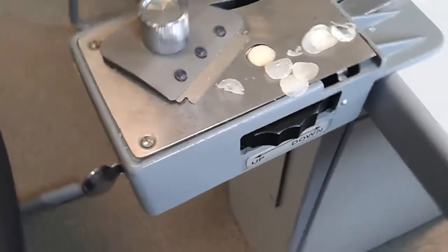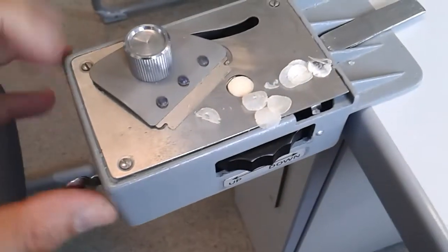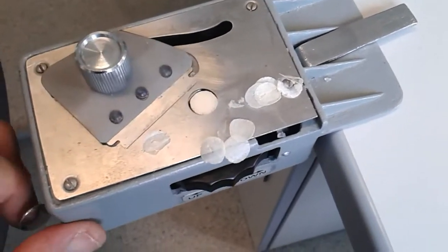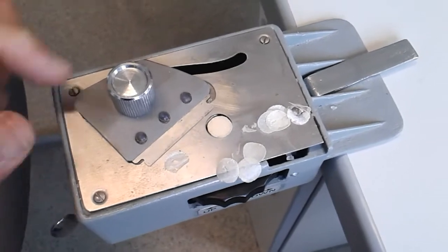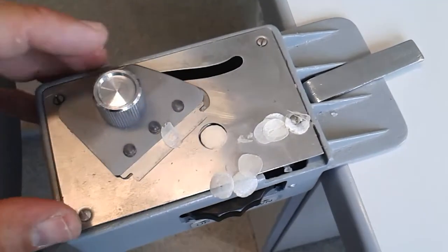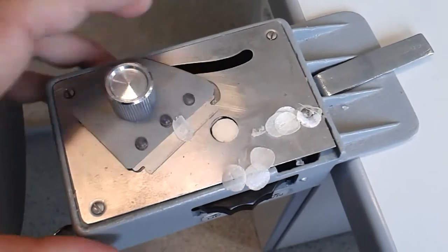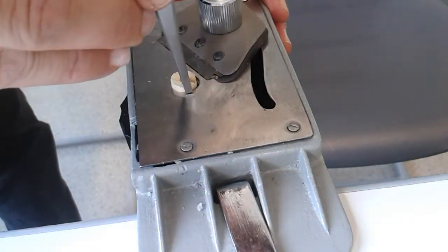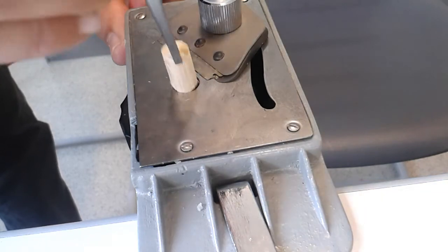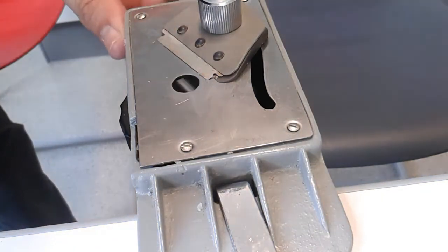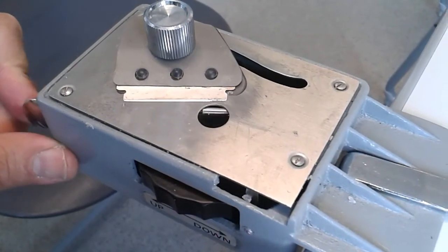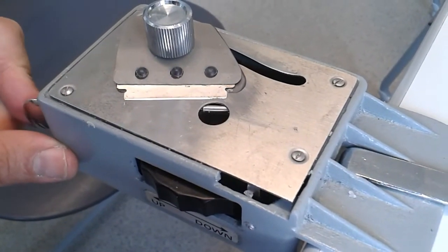In order to remove the specimen, I have to press this lever again here. This will open it up, but now I have a problem getting it out, so I might need some tweezers to actually get the elder pith out again. As you can see, pushing the lever will release the specimen.